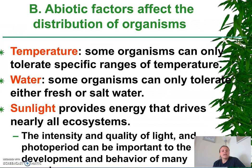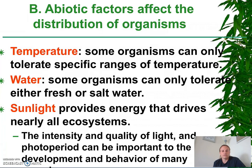Abiotic factors can affect the distribution of organisms because these abiotic factors impact organisms in different ways. For example, some organisms can only tolerate specific ranges of temperature, whereas other organisms, such as organisms found in hot springs, are not affected by extremely high temperatures.